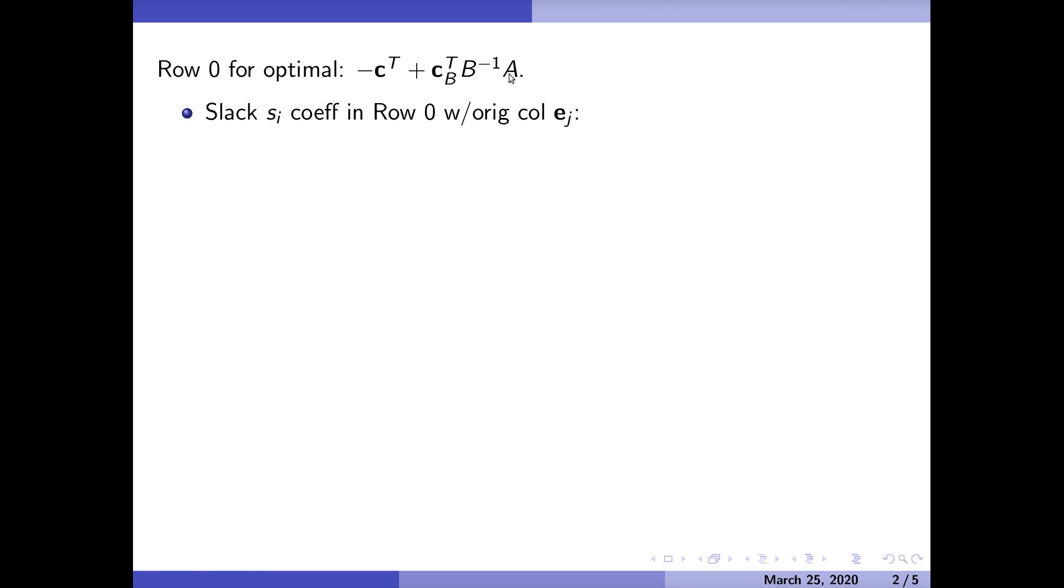How am I going to compute this quantity? Well, if I replace A by a column of the identity matrix and replace the corresponding value of c by zero, I've got the value that I'm needing. When does that happen? It happens if you have a slack variable. So if s_i is a coefficient in row zero with the original column e_j, then you see that you do have y_j right there.